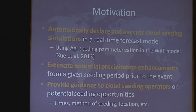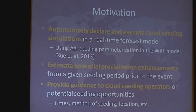Some of the other benefits of having this in real time is that we can estimate the potential precipitation enhancements from a given seeding period prior to that event using this forecast. That can then provide guidance to cloud seeding operators on potential seeding opportunities, help guide them on timing, the method of seeding — whether it should be ground-based, airborne, or a combination — and which location. In the case of Idaho Power, there are three different target areas, so we can look at which is the best location for a given time.